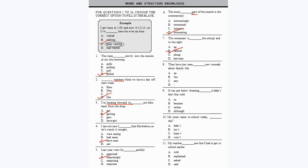It can't be 'up the school,' 'along the school,' or 'between the school' — so option B, 'behind the school and to the right,' is correct. Question 8: 'They have just seen dash new comedy about family life.' They are pointing to a particular comedy, so we use the definite article 'the': 'They have just seen the new comedy about family life' — option B.